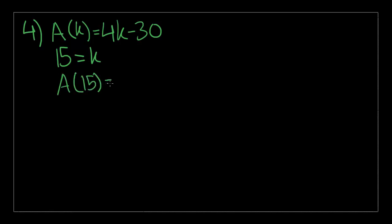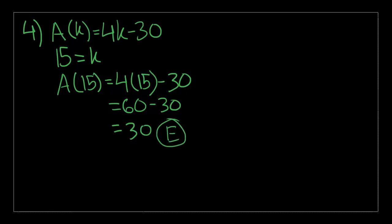So, if we plug 15 into the equation, A of 15 will be equal to 4 times 15 minus 30, which is equal to 60 minus 30, which is equal to 30. So, they earned $30 from washing 15 cars, which is choice E, and I wouldn't say that's a bad amount.